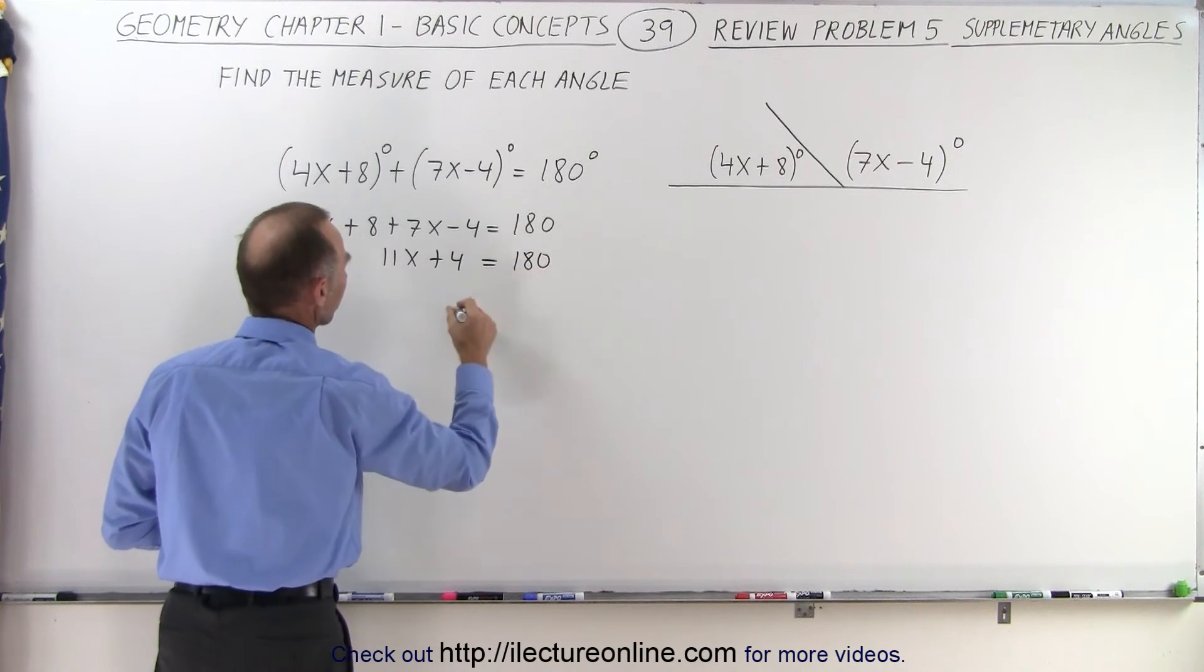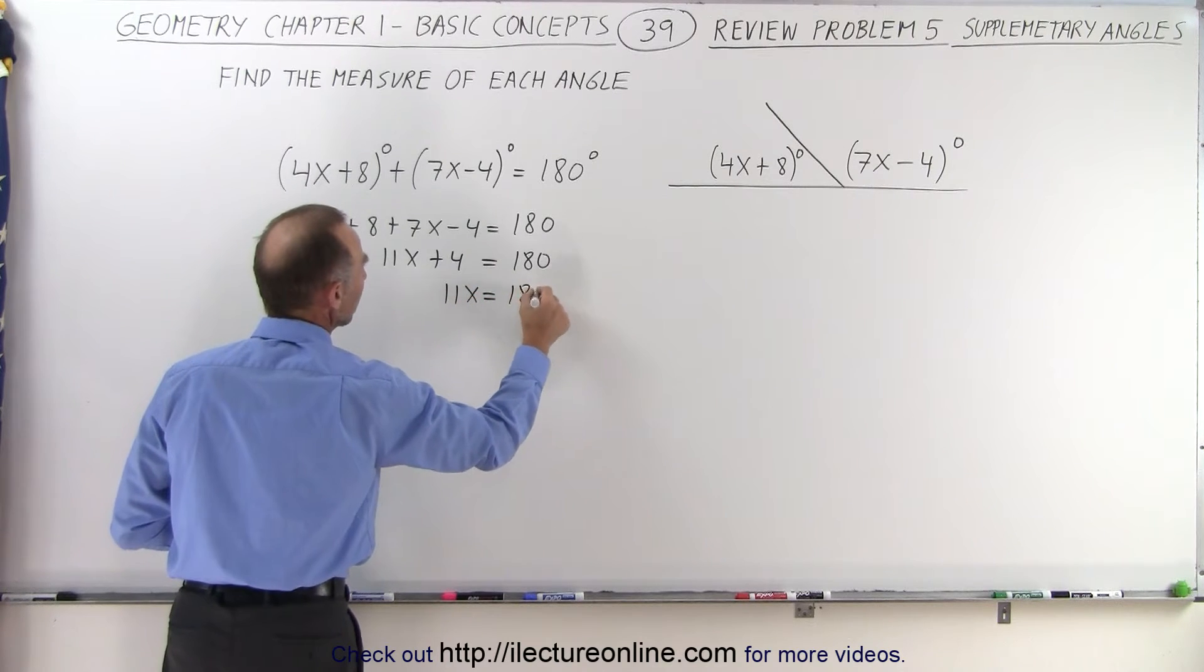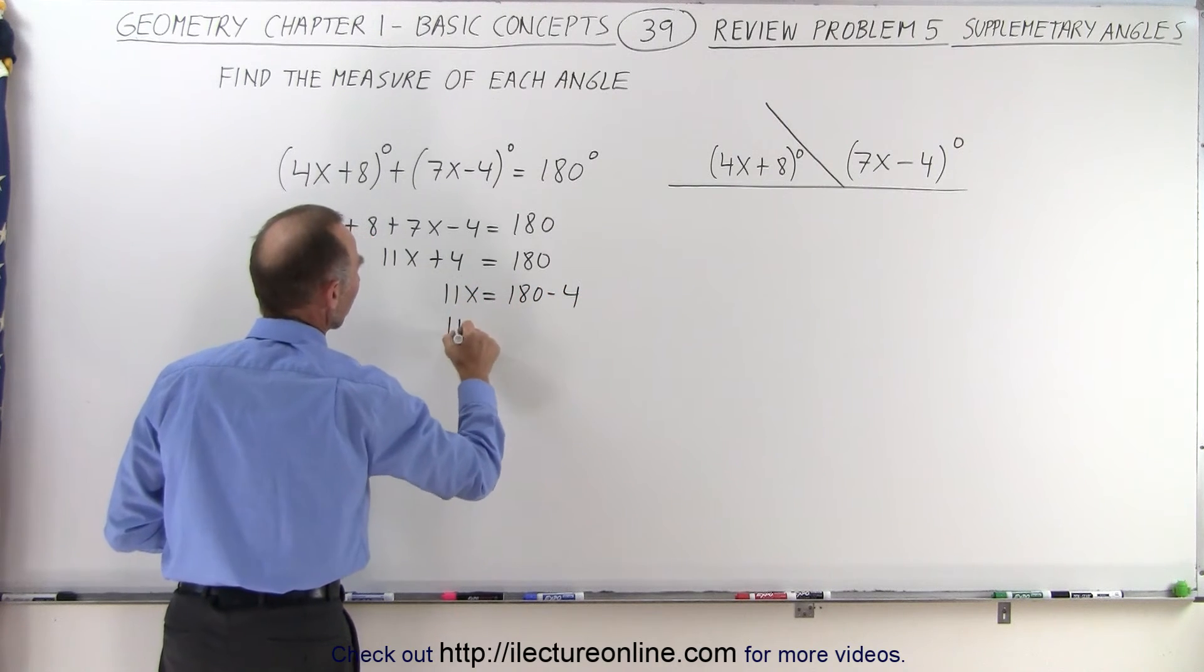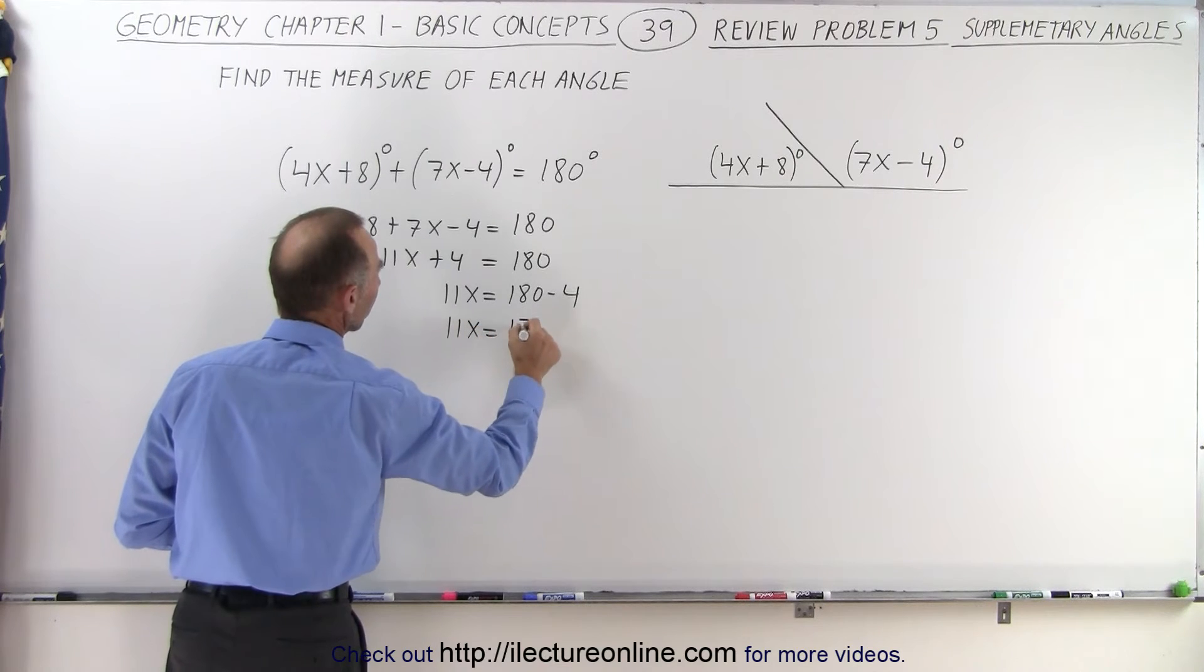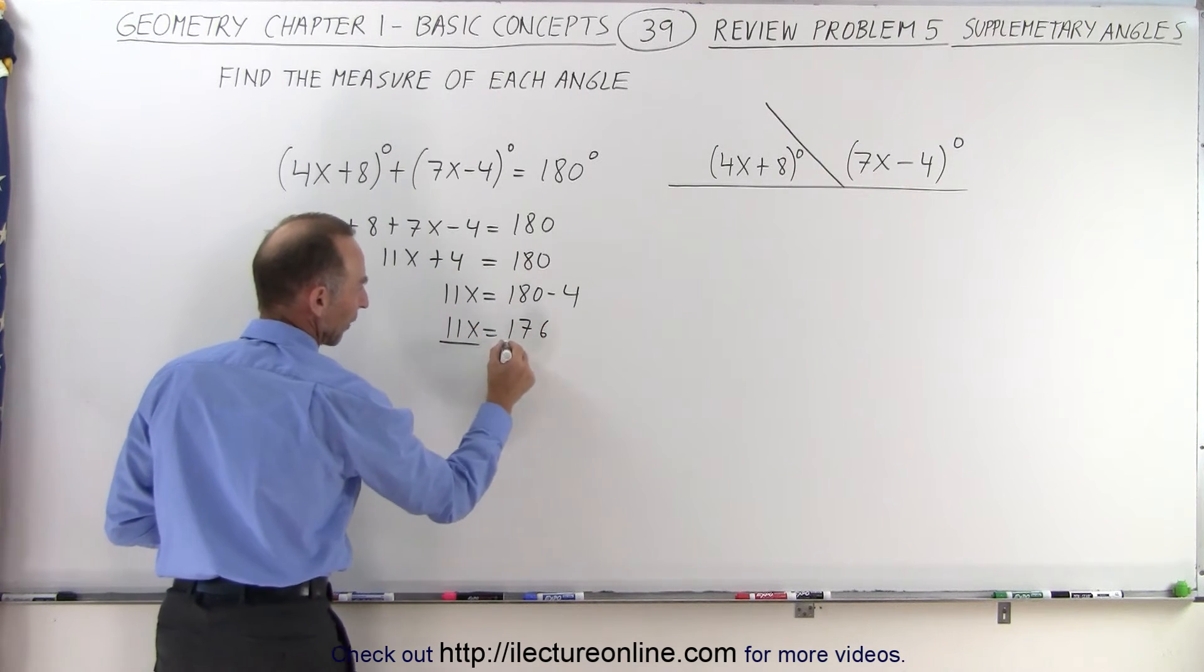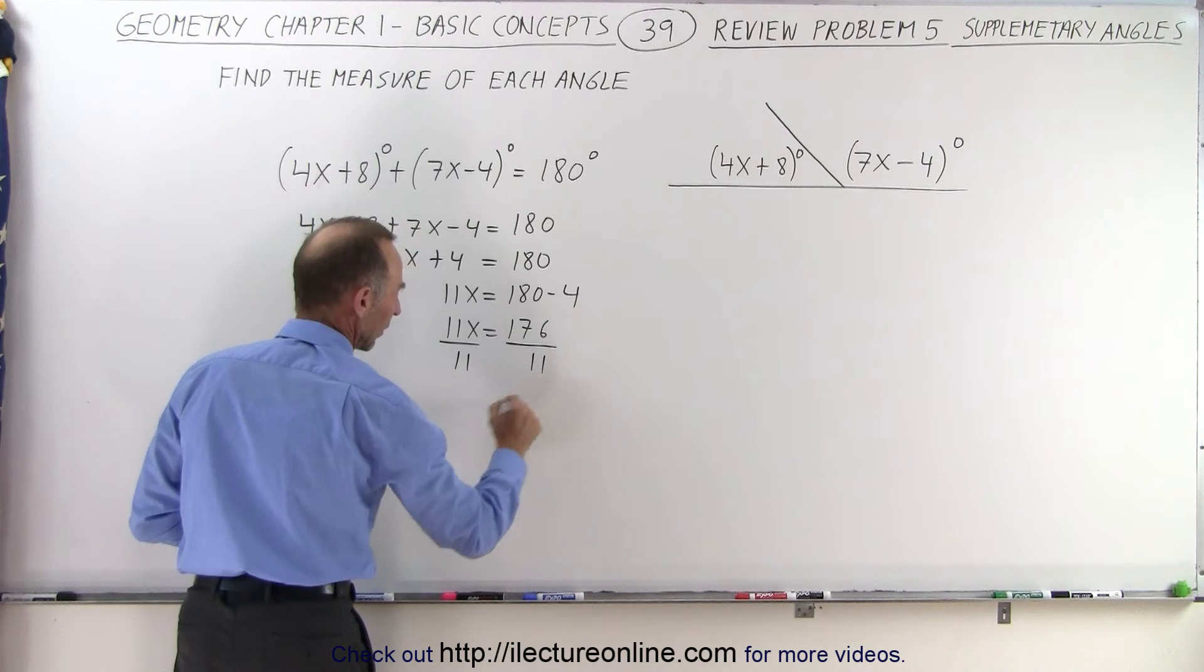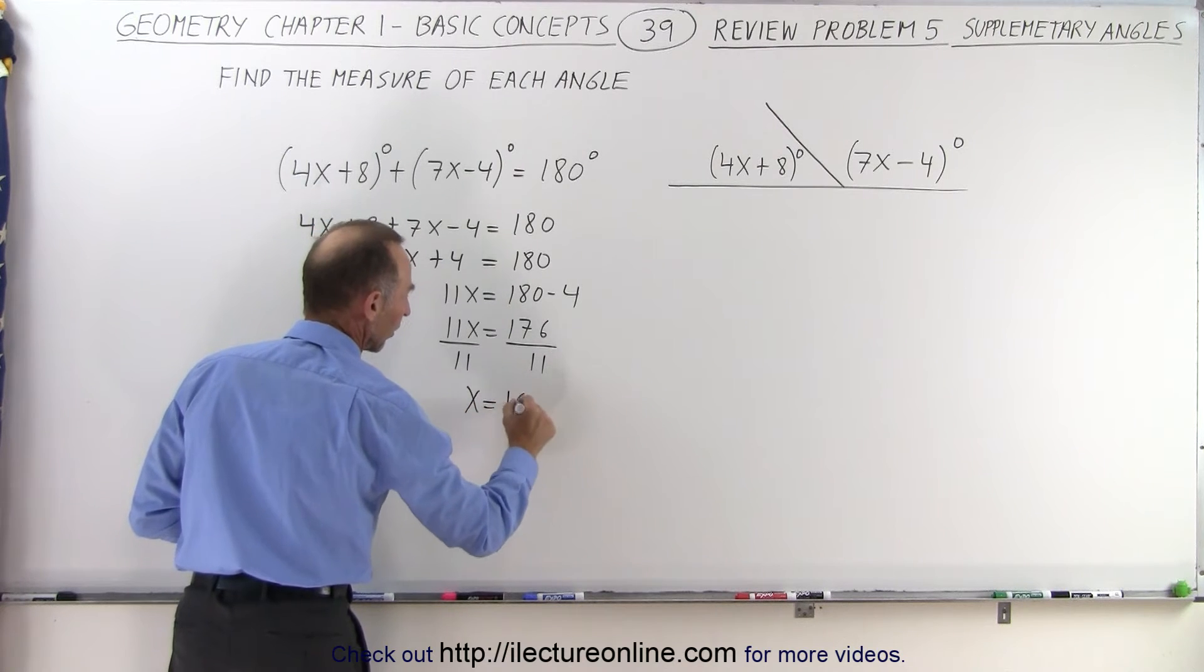Move the 4 to the other side. 11x equals 180 minus 4 or 11x equals 176. If we now divide both sides by 11 we get x is equal to 16.